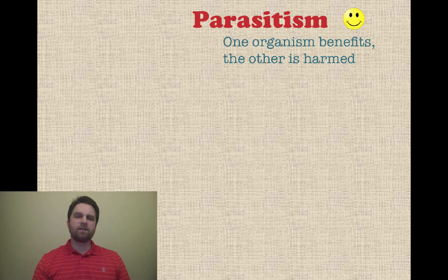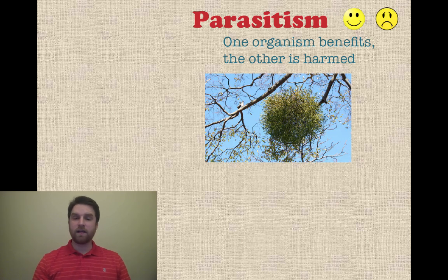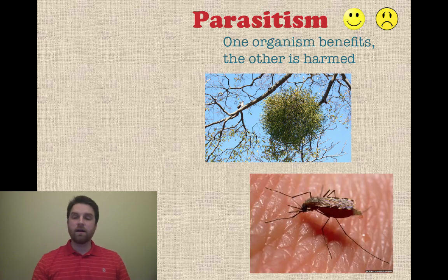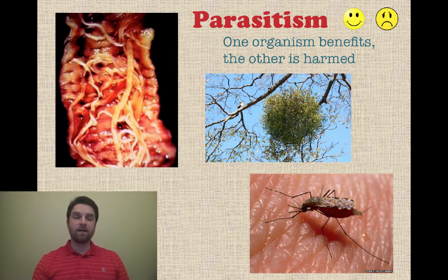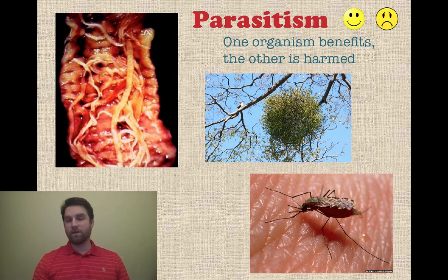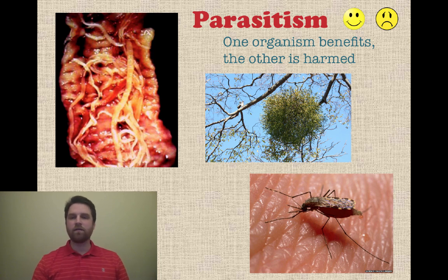Parasitism is when one organism benefits and the other one is actually harmed. For example, mistletoe in a tree — the mistletoe will end up harming the tree it grows in. Mosquitoes on humans or other organisms can harm us by carrying dangerous viruses. Another example is an intestinal worm — if an organism gets a tapeworm, it causes harm to the host while the worm itself benefits from the food it gets.